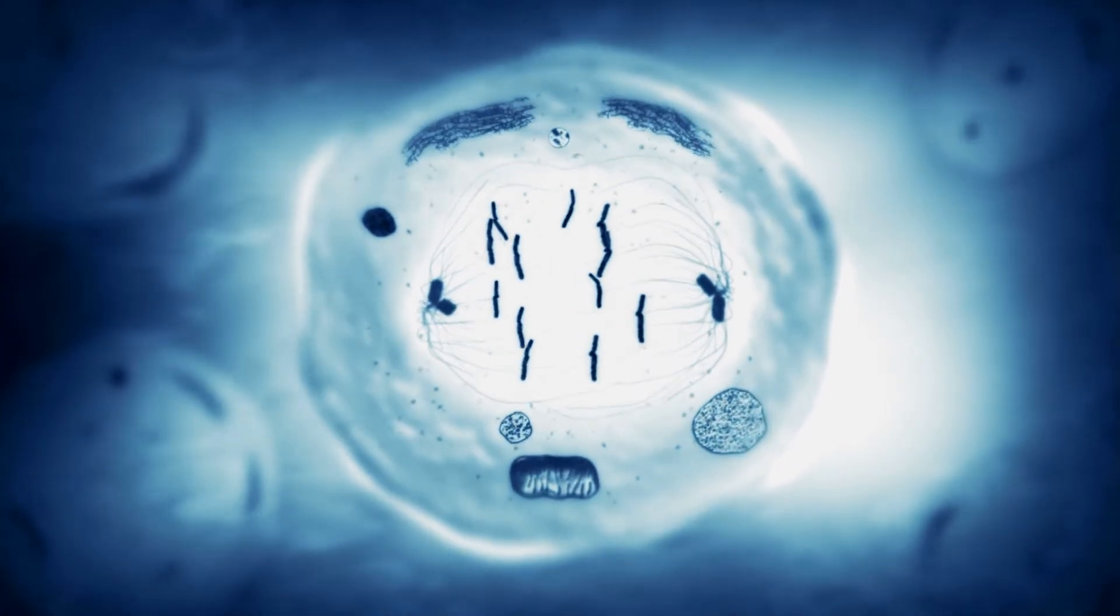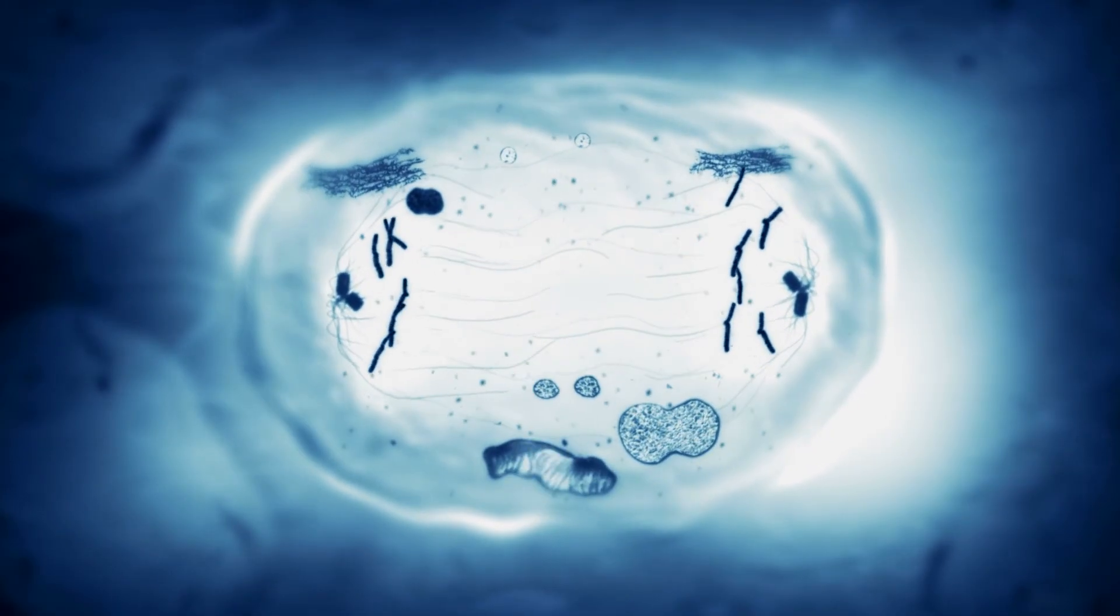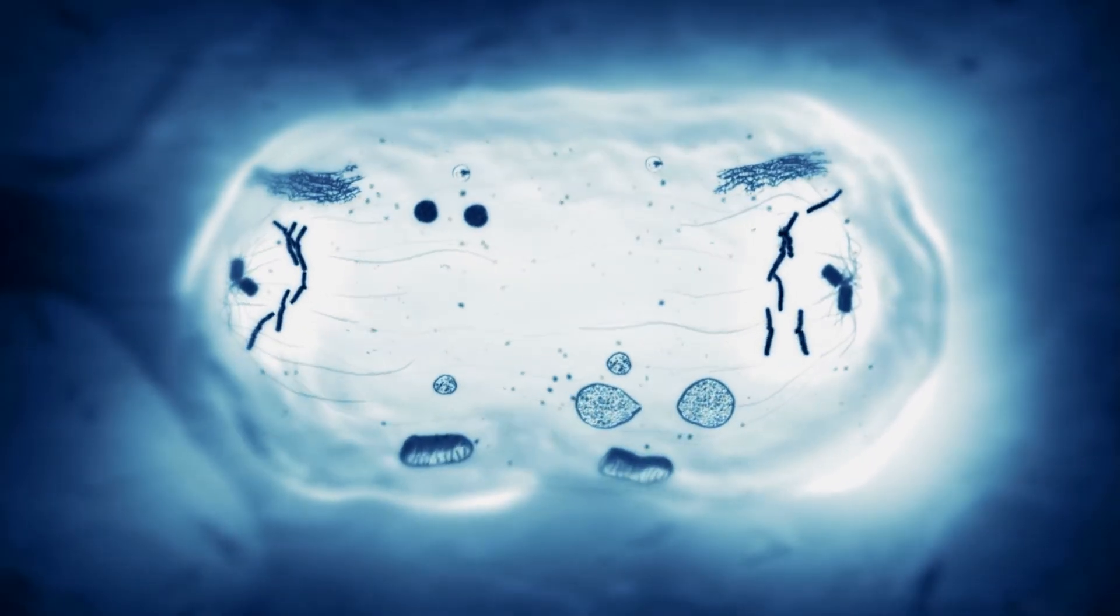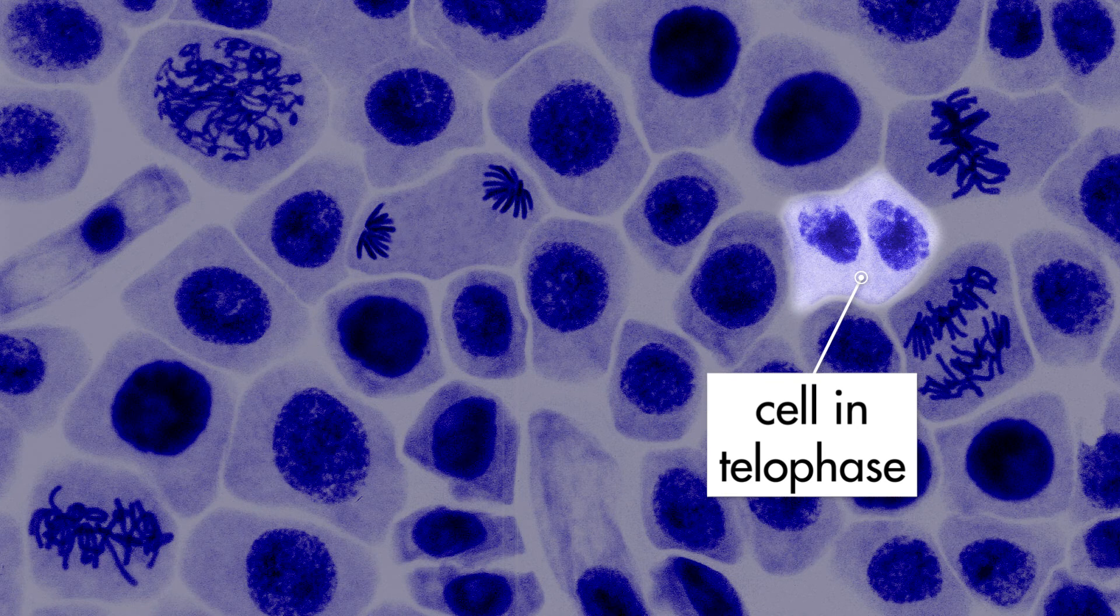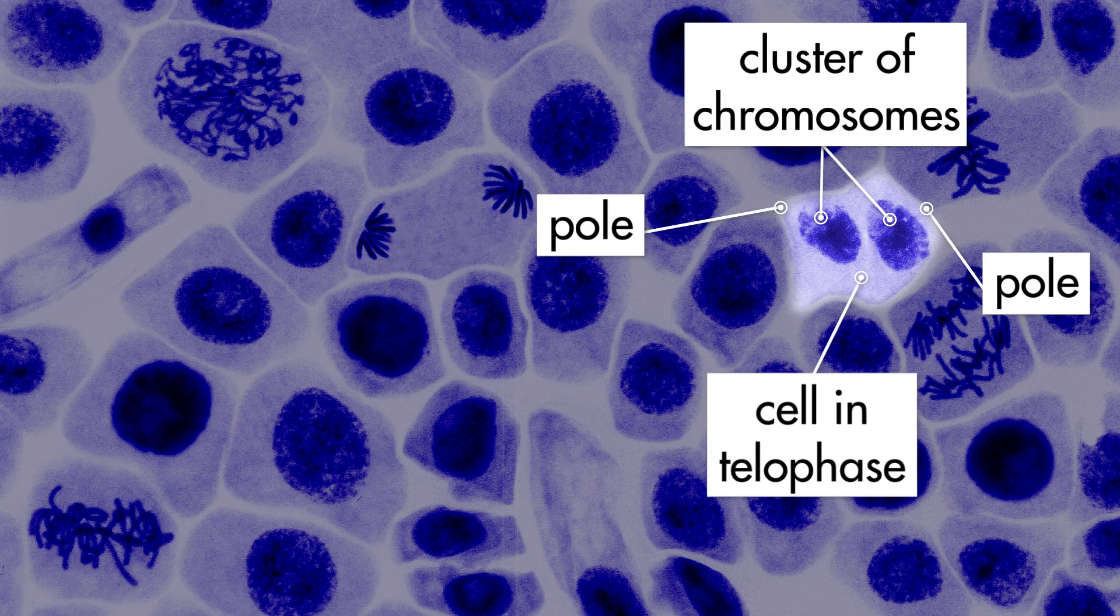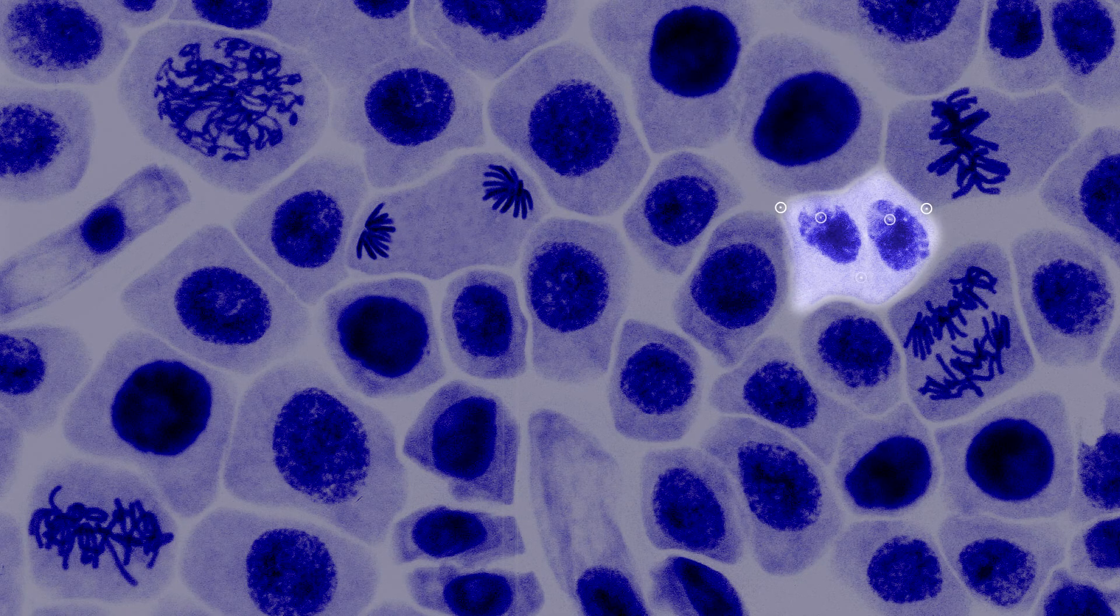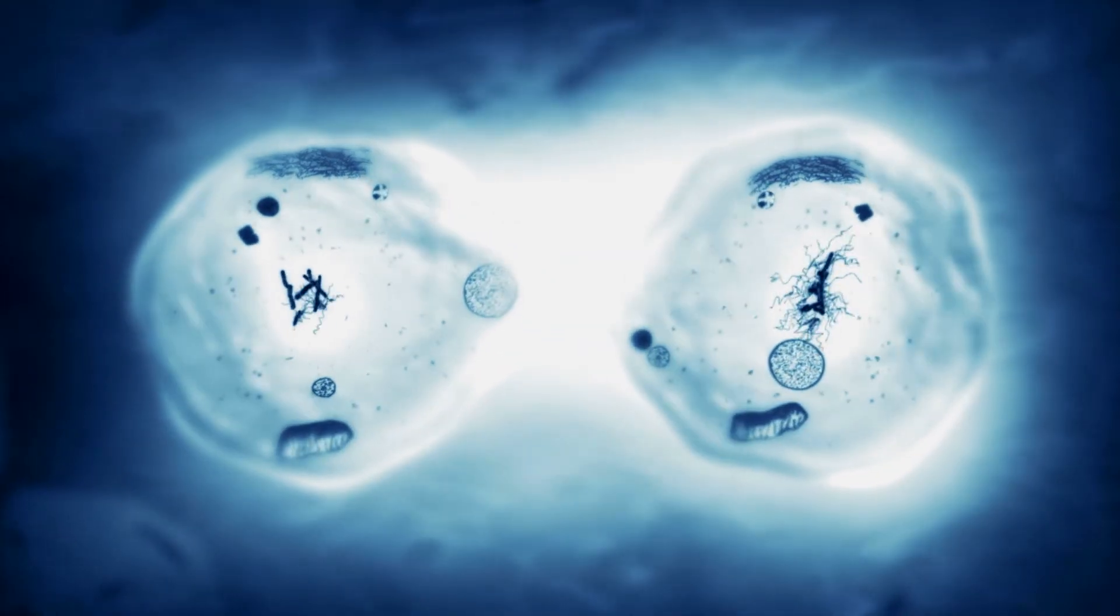Once all the chromosomes cluster together near the poles of the cell, the cell begins the last phase of mitosis which is called telophase. During telophase, the cell forms a separate nuclear membrane around each cluster of chromosomes near the poles. As soon as the new nuclear membranes form during telophase, the cell separates into two separate daughter cells.